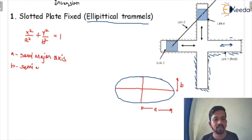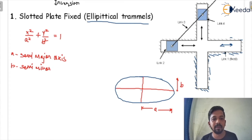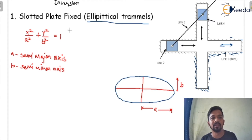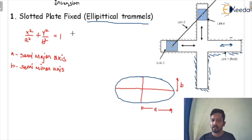If in the question the major axis is given, you must convert it into the semi-major or semi-minor axis. Then put the value into this equation of the ellipse.